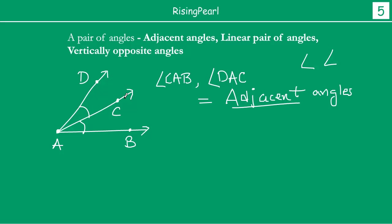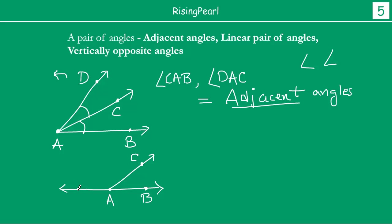Now if you keep moving ray AD in this direction to the point that it becomes a straight line, so D, A, B become collinear — it is a straight line. When that happens, we call it a linear pair of angles.